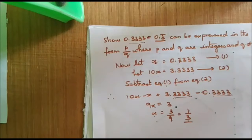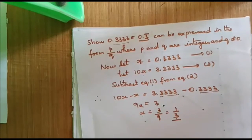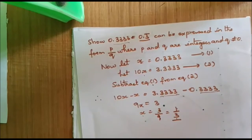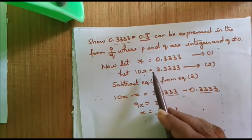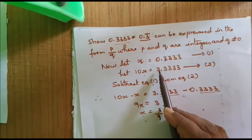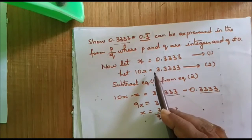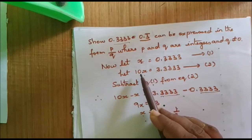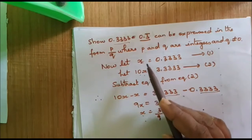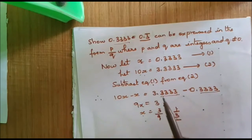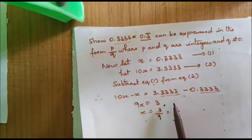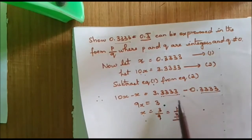Students, understand this thoroughly. Whatever number is given, take it as X. Then bring one number to this side by multiplying by 10. Then subtract the first equation from the second and you will get the answer. This is how we solve such problems.